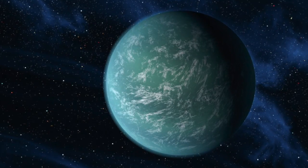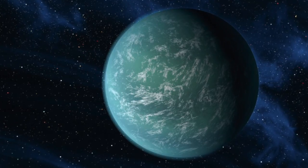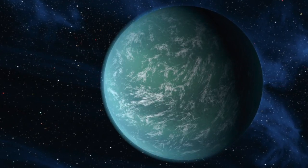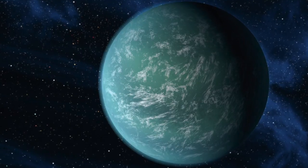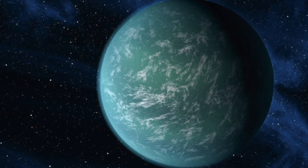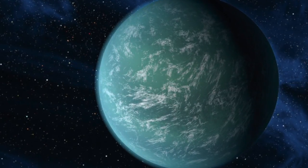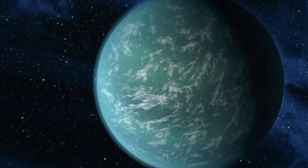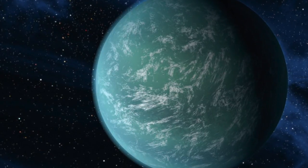This is Kepler-22b. This was the first extrasolar planet discovered by the Kepler spacecraft. Observations have shown there is a planet of a rocky core and vast oceans, but it's 600 light years away.